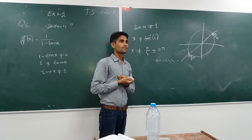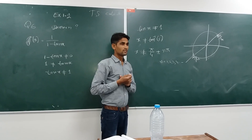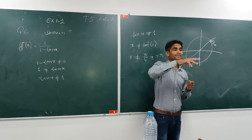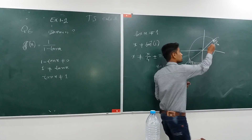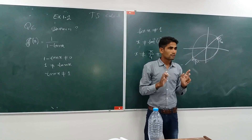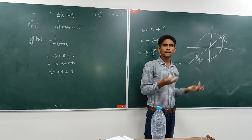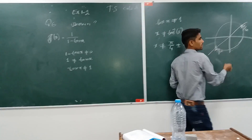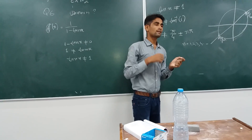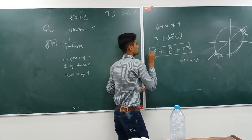Why have I written plus or minus? Because the function can move from clockwise or anticlockwise — two directions, two points. This plus or minus is due to clockwise and anticlockwise movement. So, this is our domain of this function.